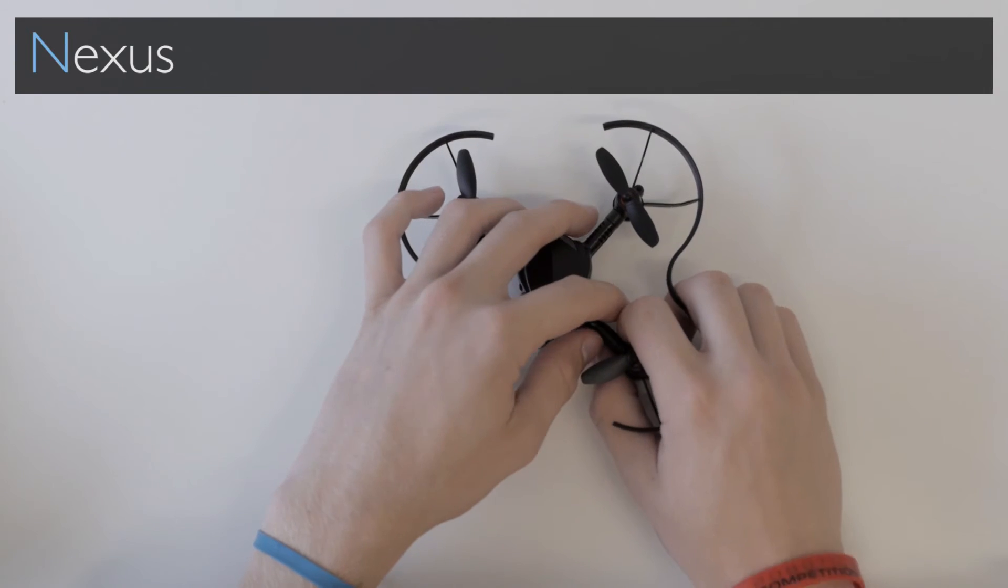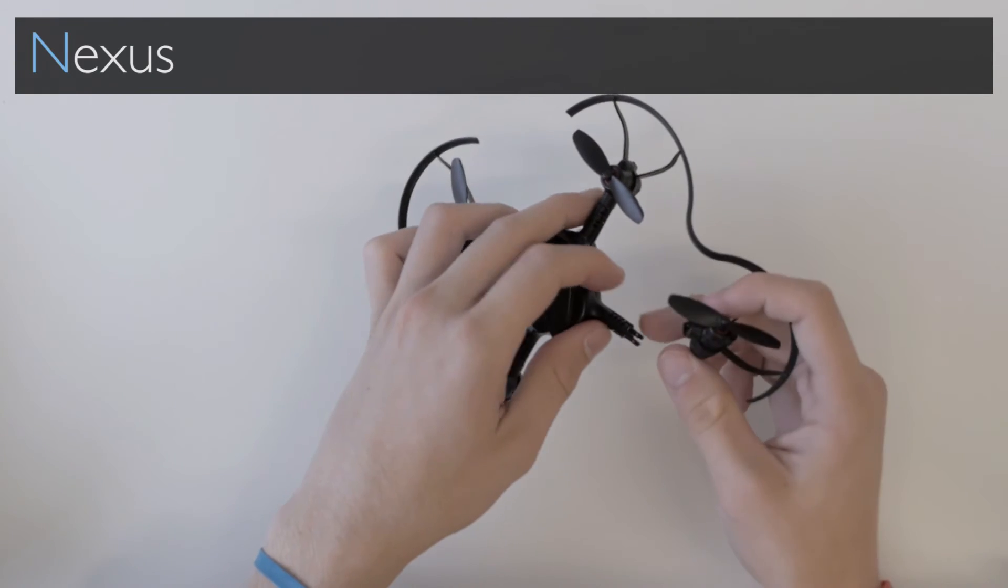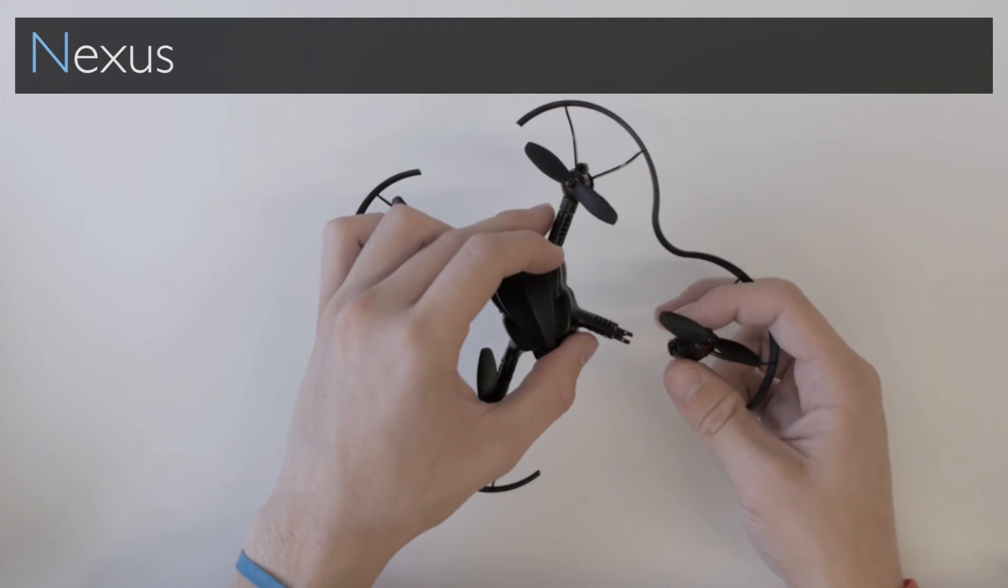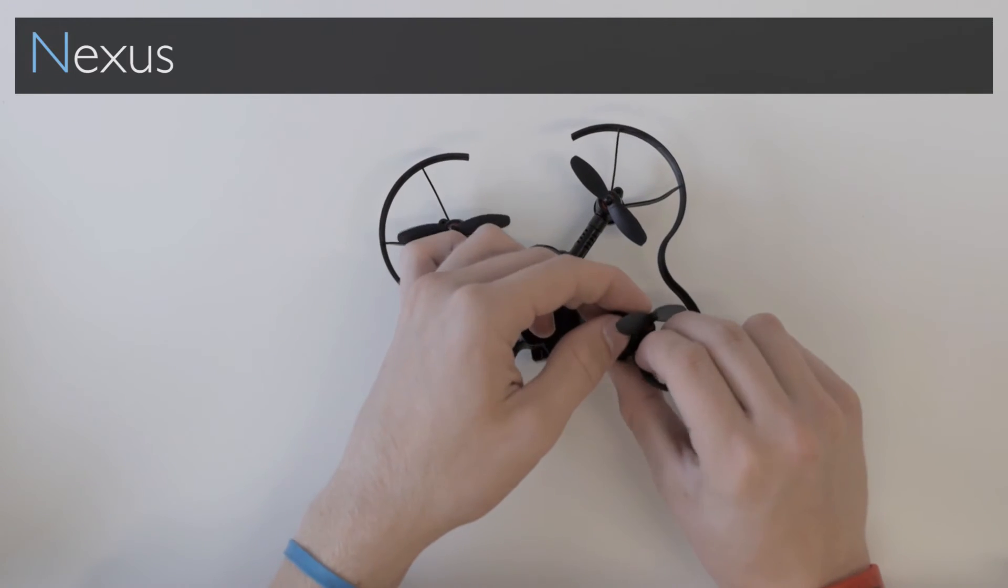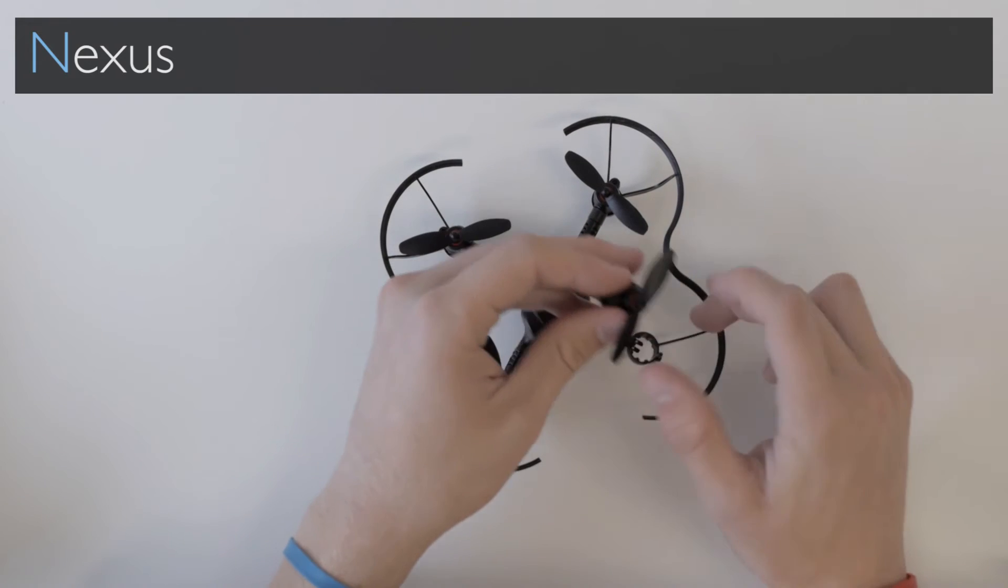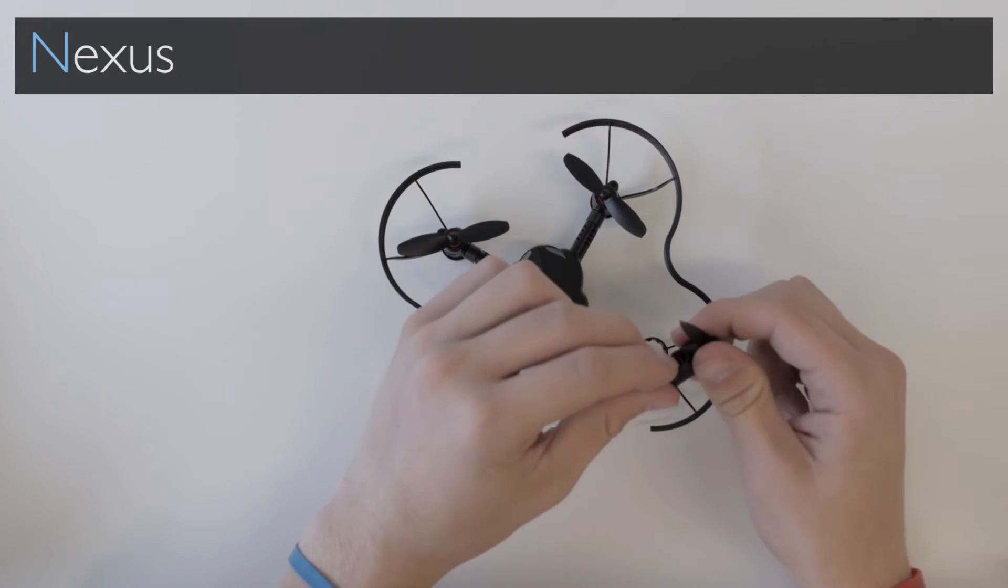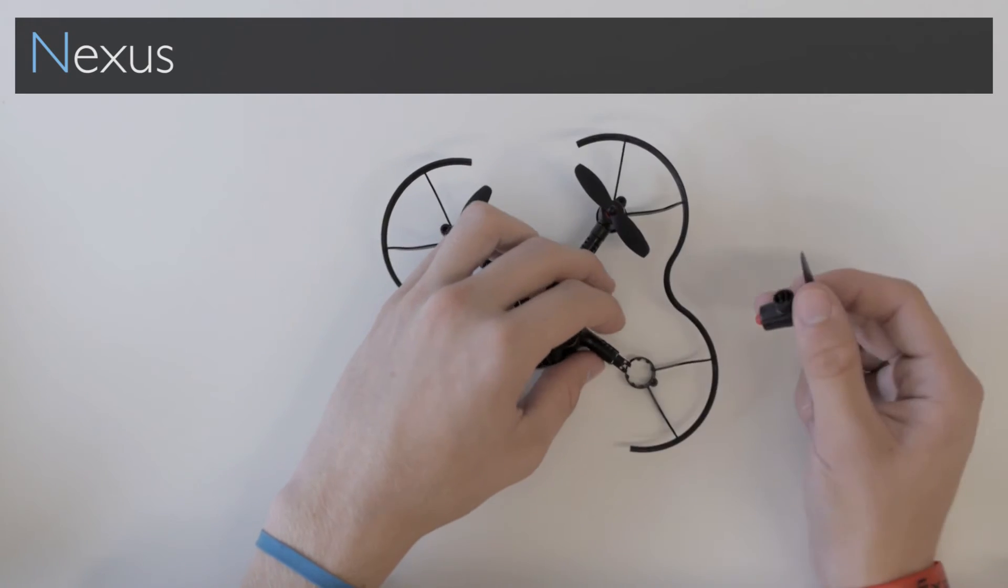We're going to check the nexus that's connecting the motor to the drone. Sometimes there will be connectivity issues where the leads aren't touching the plates on the drone.